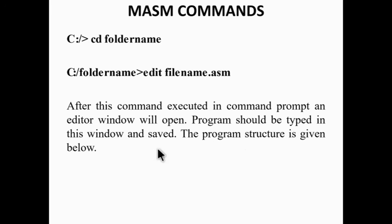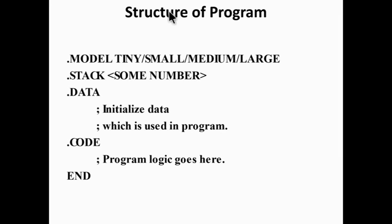Structure of a program: .model — defines the memory structure. .tiny refers to one code segment. .small refers to one data segment and one code segment. .medium is one data segment and two code segments. .large means more than one code segment and more than one data segment.